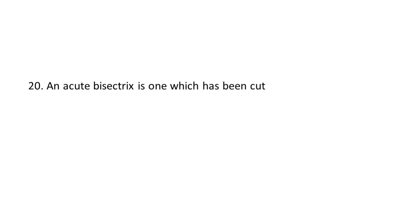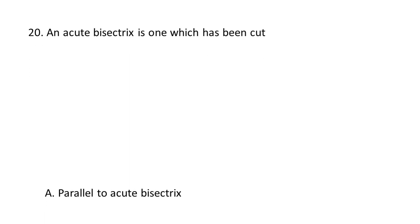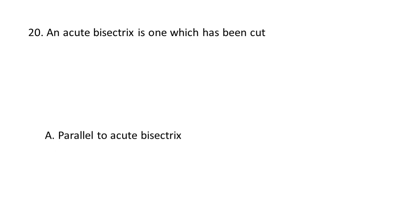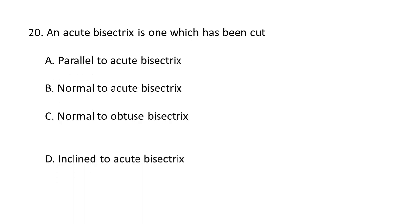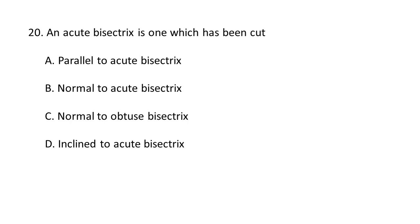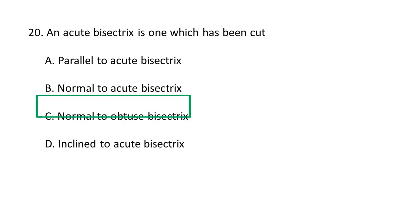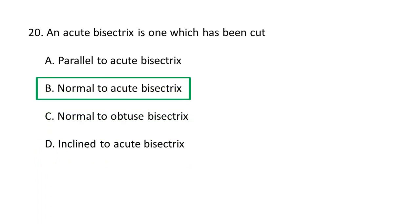Next question: An acute bisectrix figure is one which has been cut — A. parallel to acute bisectrix, B. normal to acute bisectrix, C. normal to obtuse bisectrix, D. inclined to acute bisectrix. An acute bisectrix figure is one which has been cut normal to the acute bisectrix. The BXA figure is the acute bisectrix, a line that bisects the acute angle between the two optic axes. B is the correct option.